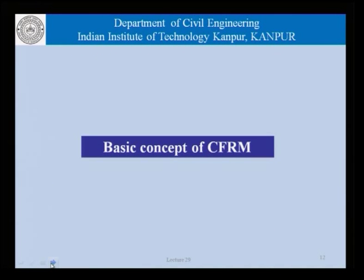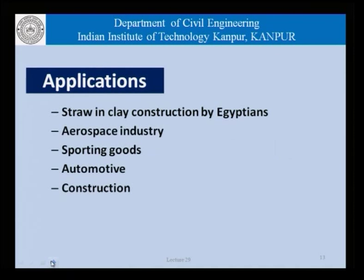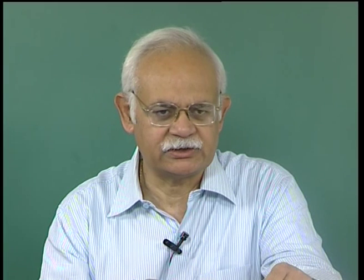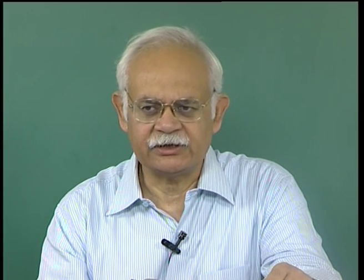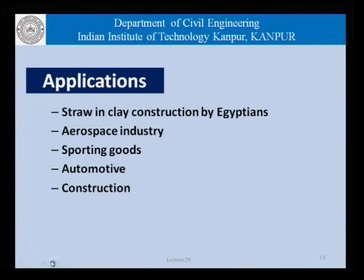Let us first examine the basic idea of these materials. As far as applications are concerned, it was the ancient Egyptians and other ancient civilizations who used straw in clay construction, and that can probably be seen as the first use of fibers in construction materials. Of course, now they are used extensively in the aerospace industry, sporting goods, automotive industry, and are beginning to be used in the construction industry and concrete.